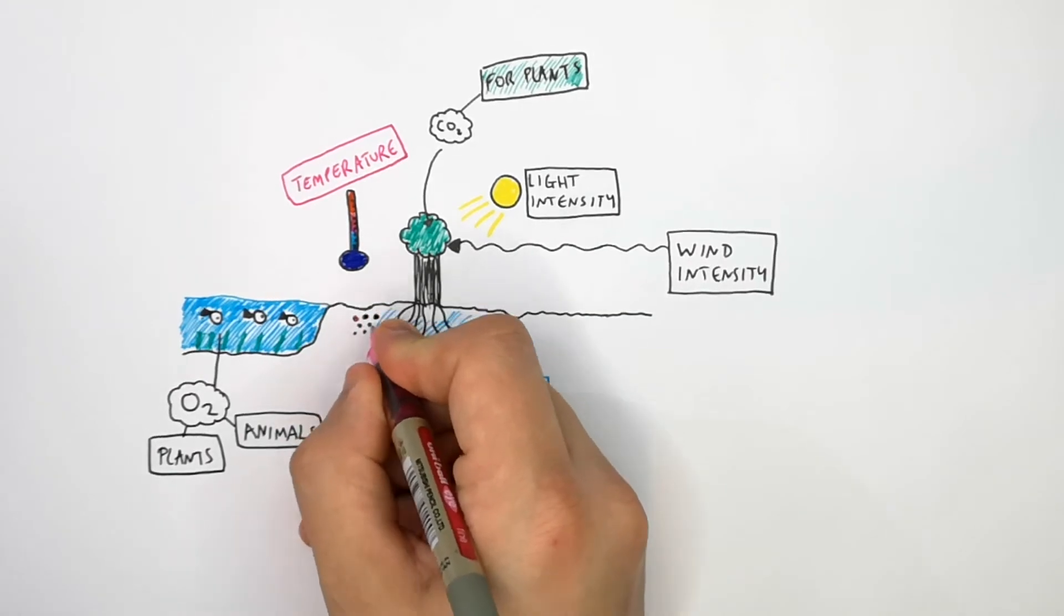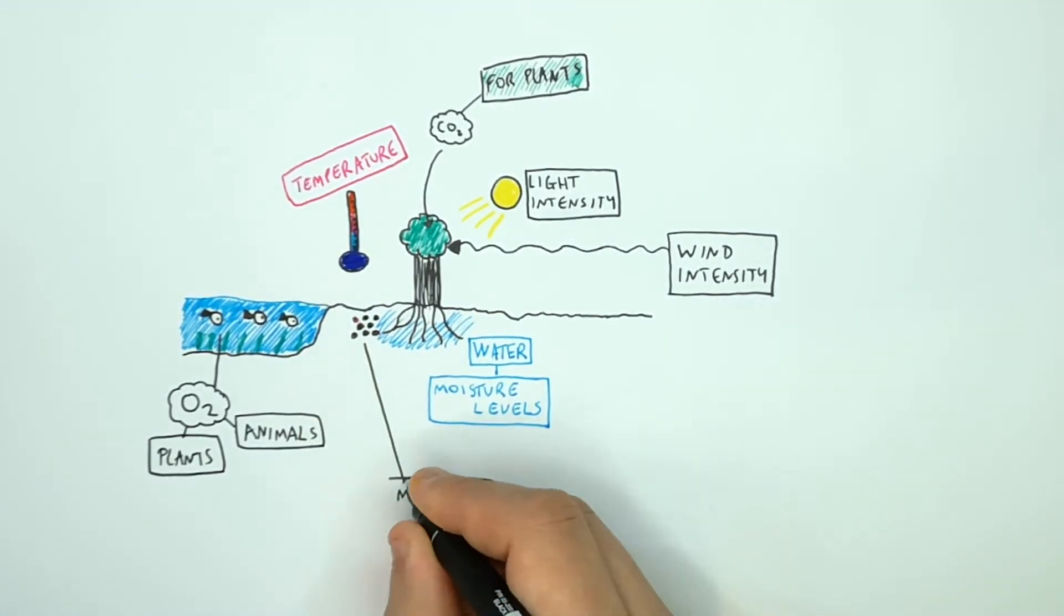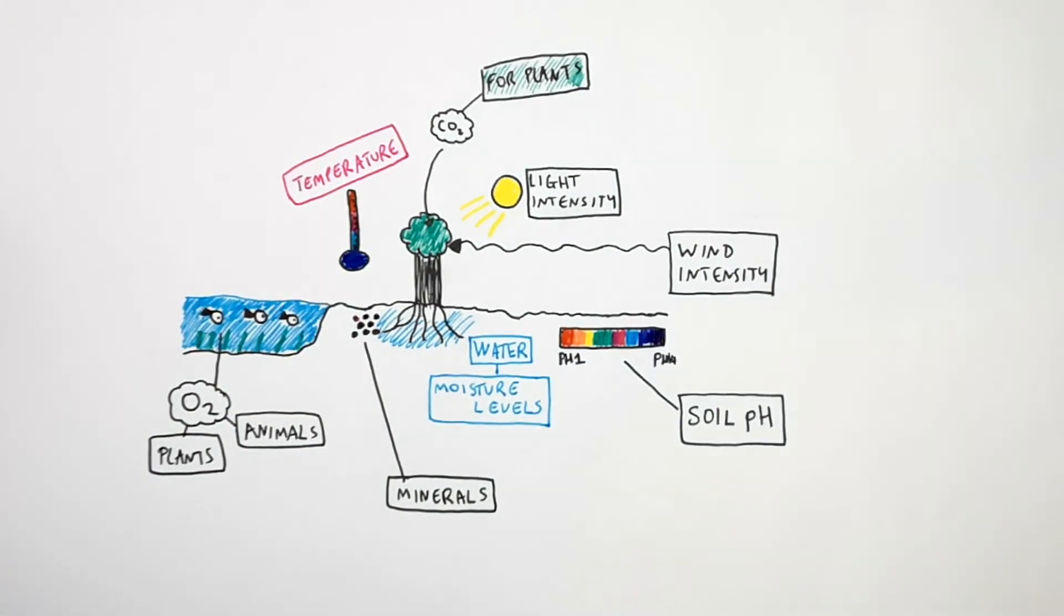Mineral content in the soil is an abiotic factor for plants. pH levels in the soil are another abiotic factor. Now we're going to explain how these abiotic factors can affect living organisms.